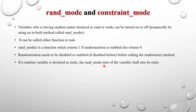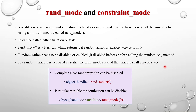If a random variable is declared as static, the rand_mode state of that variable shall also be static. Static means if any changes occur to that variable they will be reflected in all other instances of the class. We will see this static nature in an example.